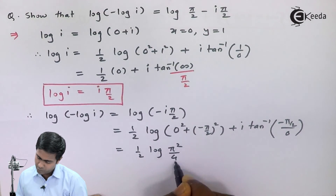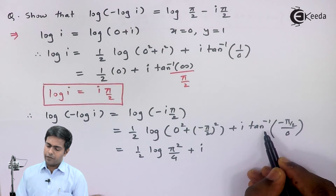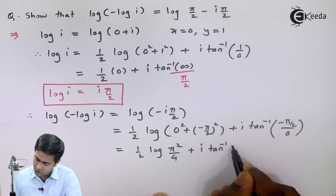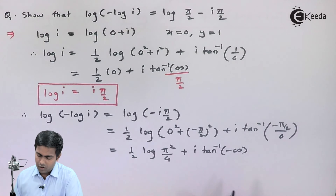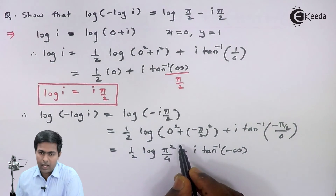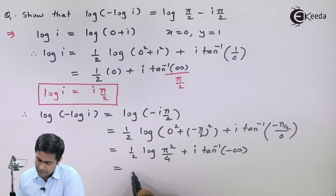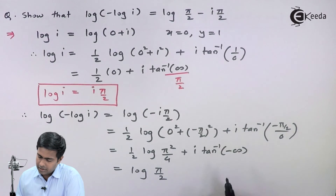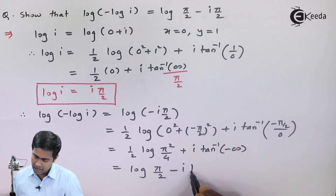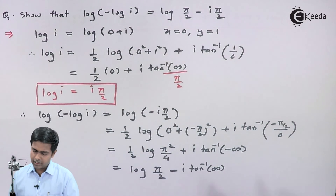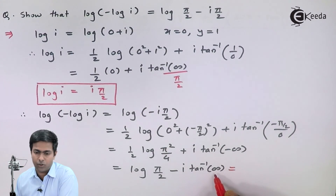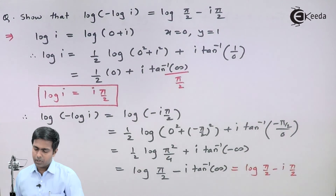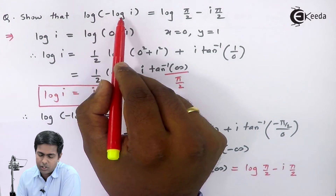Since the numerator is negative, we get i tan inverse of negative infinity in the bracket. Taking the half as a power brings it outside as a root, so we get log of root of pi squared by 4, which is nothing but pi by 2. The tan inverse of negative infinity gives minus pi by 2. Hence the final value is log of pi by 2 minus i pi by 2, which is the required value of log of minus log i.